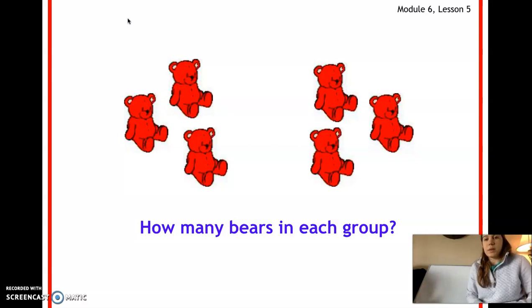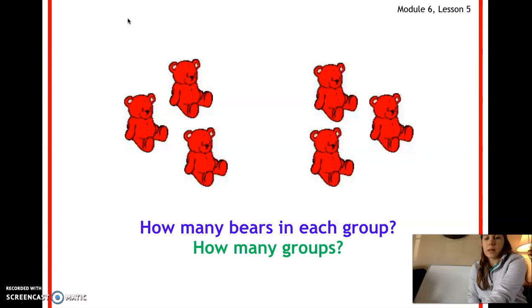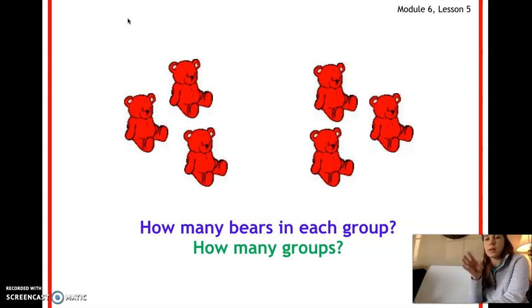So let's look at this picture. Our question says how many bears are in each group? Look at this picture — how many bears do you see in each group? I see three bears in each group. How many groups are there? I see two groups: one on the left and one on the right.